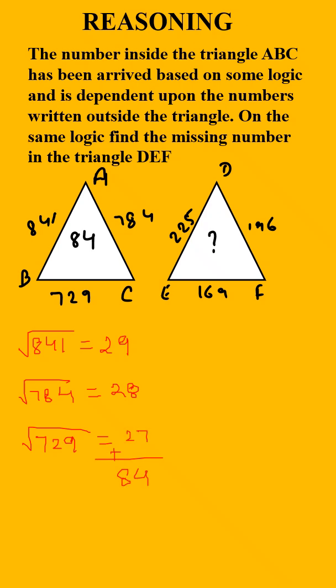Now the same logic you have to apply here for the second triangle DEF. Root of 225 is 15, root of 196 is 14, and root of 169 is 13.